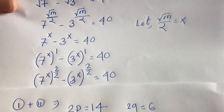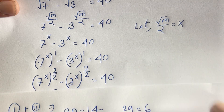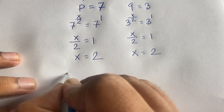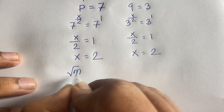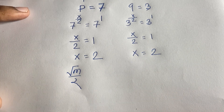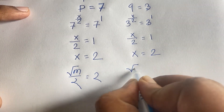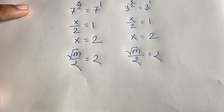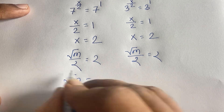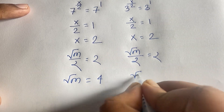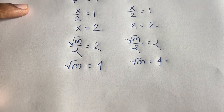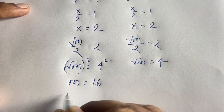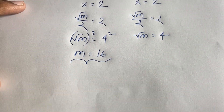Remember that x = √m / 2. So √m / 2 = 2, which means √m = 4. Squaring both sides gives m = 16. That is our final answer.